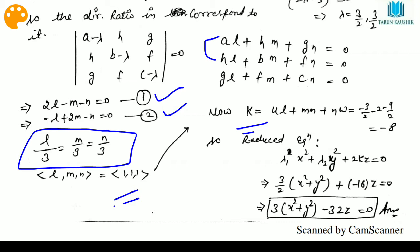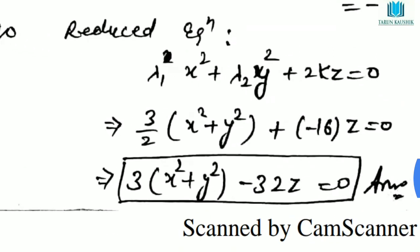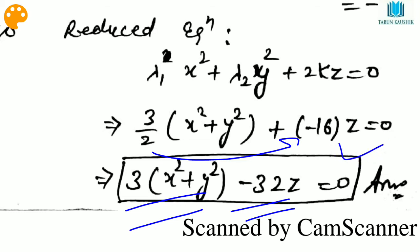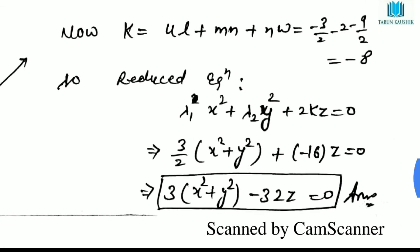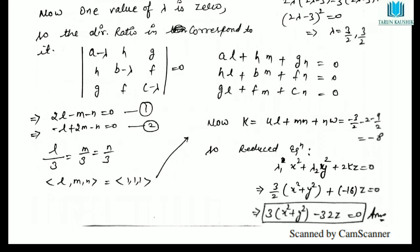Now calculate the value of k. With l = m = n = 1 and the known u, v, w values, k comes out to be -8, which is non-zero. Since k is non-zero, the reduced standard equation is: lambda₁x² + lambda₂y² + 2kz = 0, where lambda₁ = lambda₂ = 3/2. This gives (3/2)(x² + y²) - 16z = 0, or equivalently 3x² + 3y² - 32z = 0.